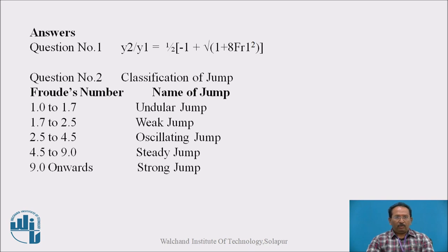And for the answer for the question number 2, as per the Froude's number 1 to 1.7 undular, 1.7 to 2.5 weak, 2.5 to 4.5 oscillating, 4.5 to 9 steady, and above 9 strong jump.